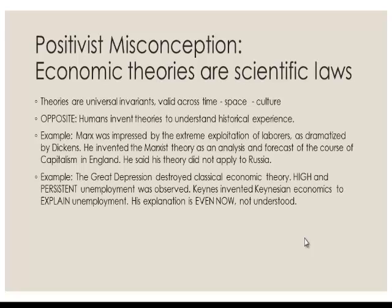When Keynes saw the Great Depression he said his theories were wrong, because one of the great predictions of classical theory was that there cannot be long-term persistent unemployment — the wage will fall and the excess supply of labor will finish. But that did not happen for more than 15 years. High unemployment continued basically until the World War, which changed the situation drastically. So it was obvious after the Great Depression that classical theory does not work. Keynes started thinking about how to make a theory in which the labor market does not equilibrate. To understand Keynesian theory, you have to understand the historical context.